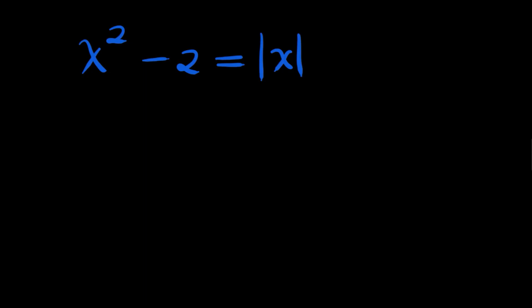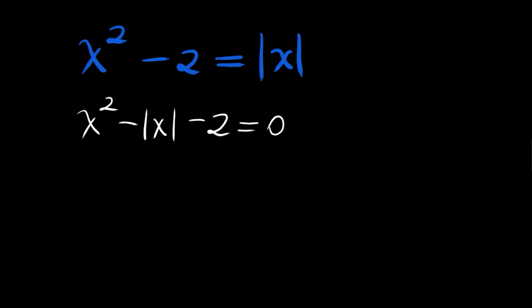Hello my friends, welcome to our math positive channel. We have an equation here: x squared minus 2 is equal to the absolute value of x. Let's begin by taking this absolute value of x to the left hand side and write x squared minus absolute value of x minus 2 is equal to 0.